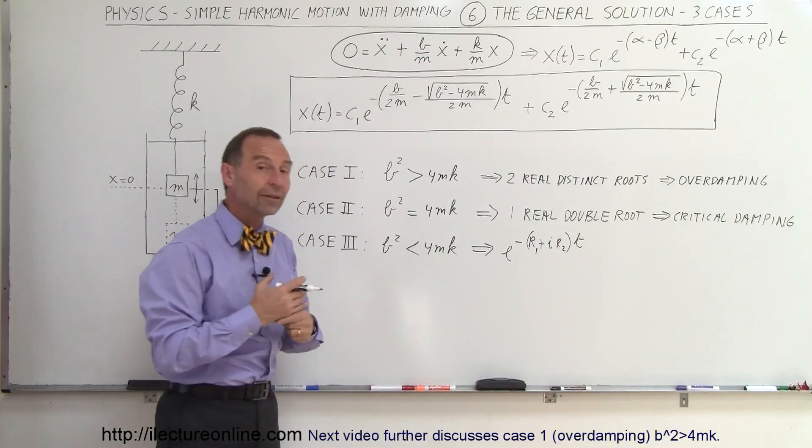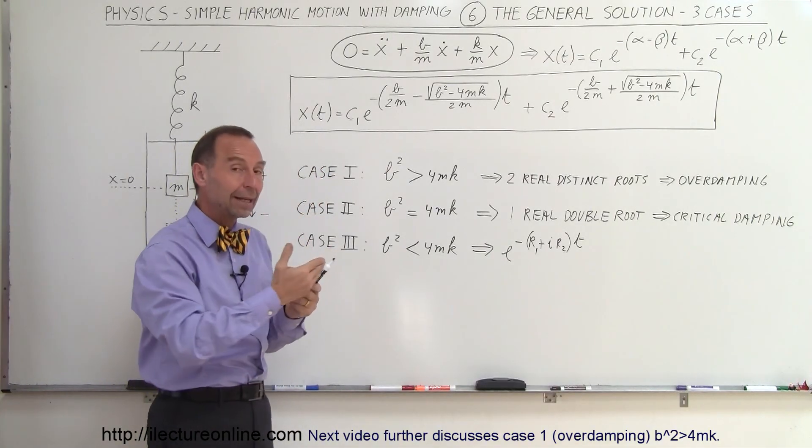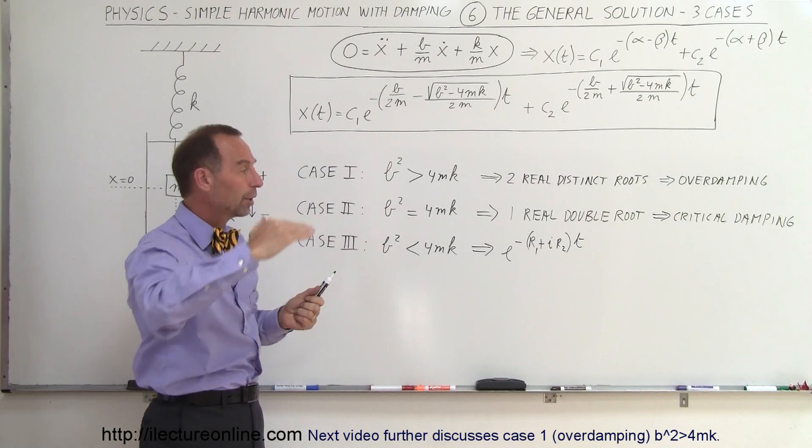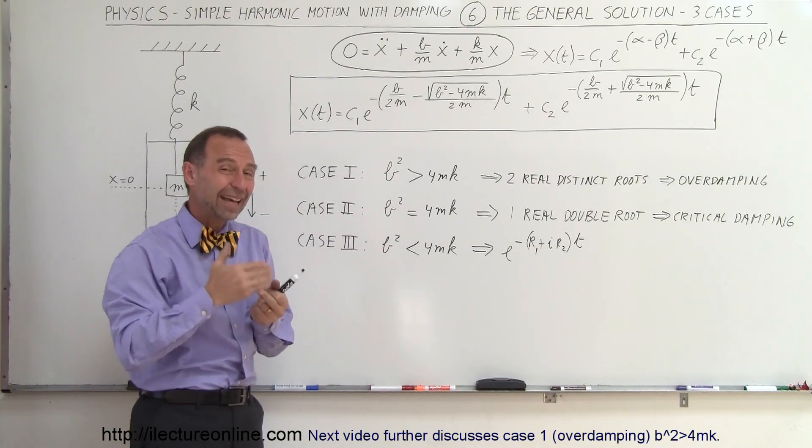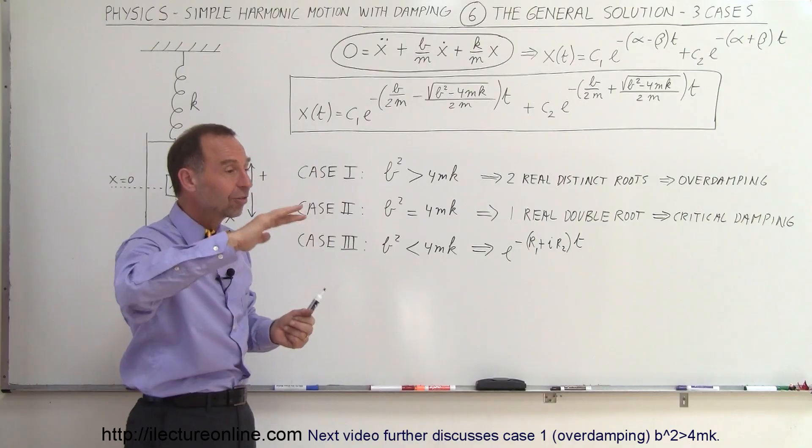Which would then result in an exponential equation multiplied times an oscillatory equation. In other words, we'll get a sine and a cosine function out of that. In other words, it will begin to oscillate.